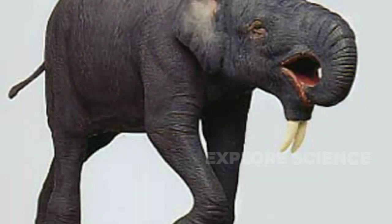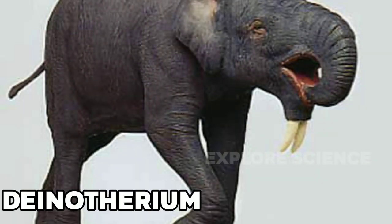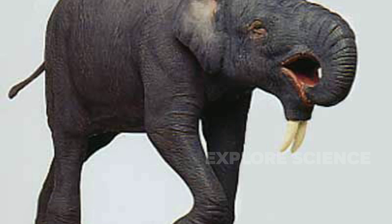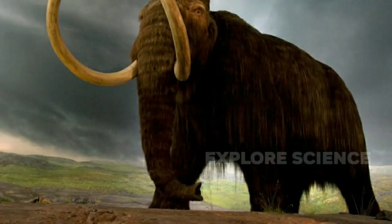Then came the Deinotherium. It resembled modern elephants — the change was it had a moveable trunk and became bigger, except it had downward-curving tusks.